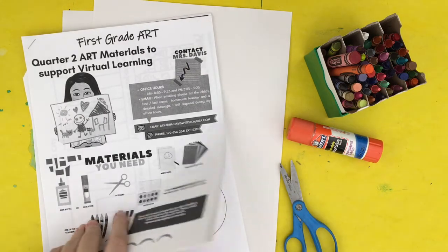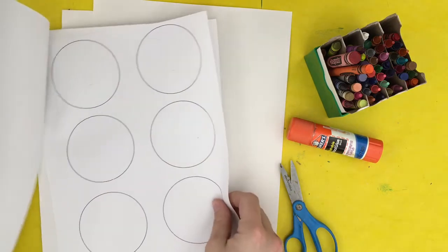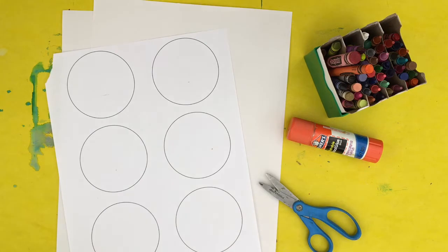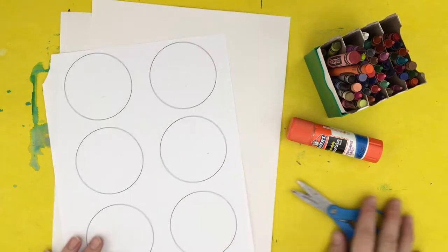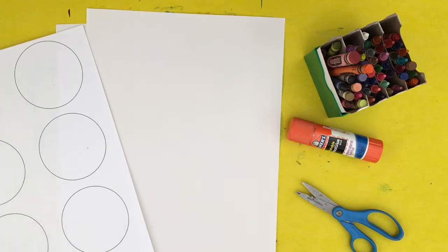What we're going to do is go in the related arts packet and there are these circles. We're just going to pull them out and then you have two pieces of white paper. We're going to make a still life. We're going to make mittens and snowballs in the snow.